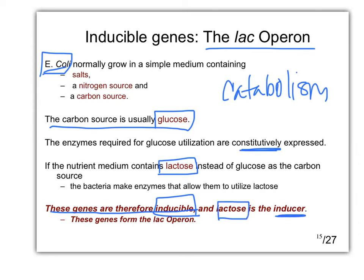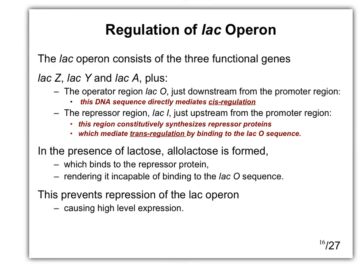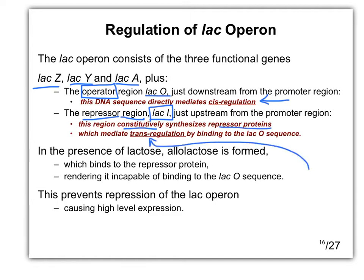All of these form the lac operon. The lac operon has three functional genes: lac z, lac y, and lac a. There's also an operator sequence called lac o — any DNA sequence is considered cis regulation, a regulatory element. The repressor region, also known as lac i, is the gene that codes for the repressor protein. This is constitutive — it always makes the repressor. The repressor is a trans regulator because it's a protein that binds to a cis element (the DNA). The protein is always trans; the DNA is always cis.